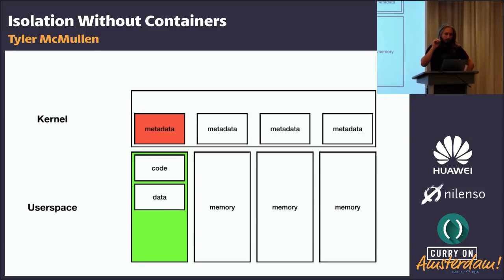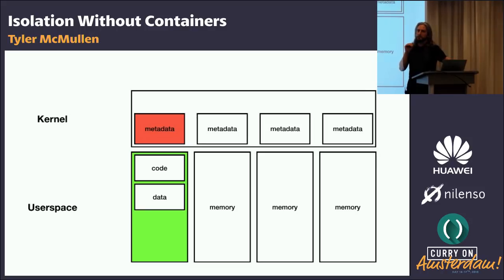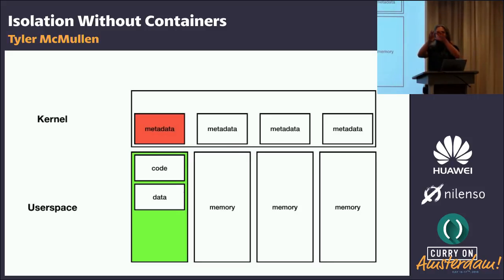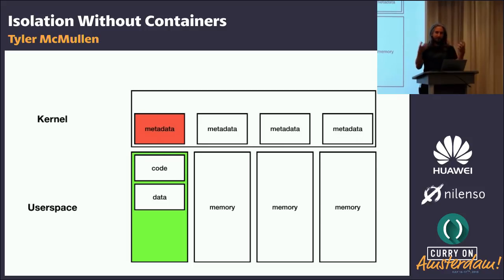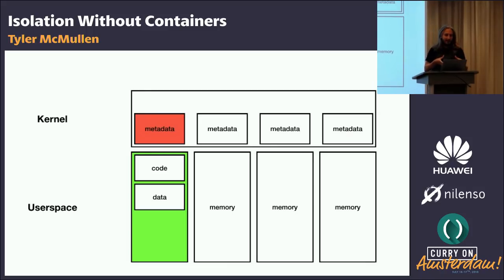I think this is one of the reasons that the Spectre attacks were such a big thing. If the only wall around our processes is the virtual memory system that protects us from everything, then the fact that Spectre could cause you to break that wall was devastating. That part being broken is why, in my opinion, Spectre was such a big deal.